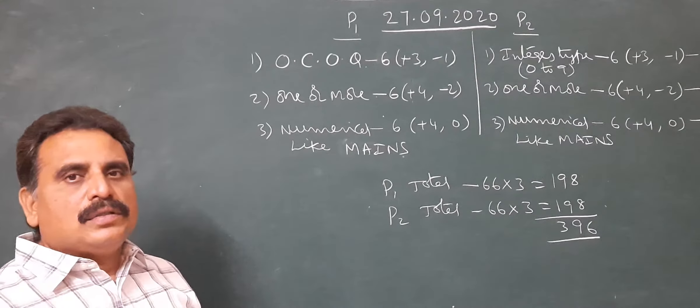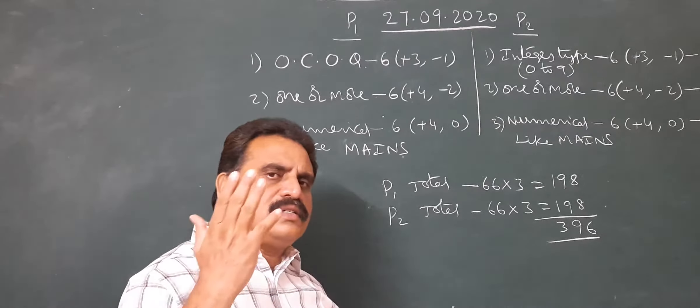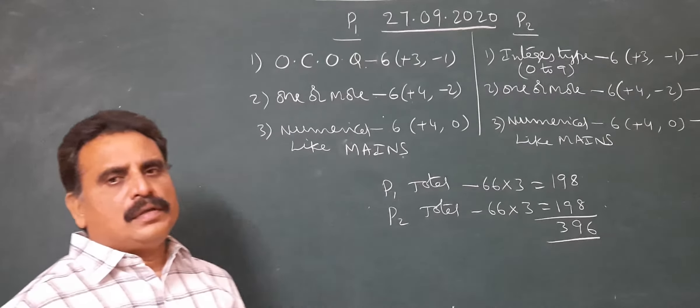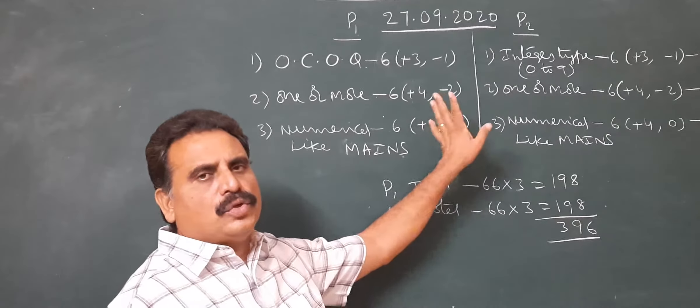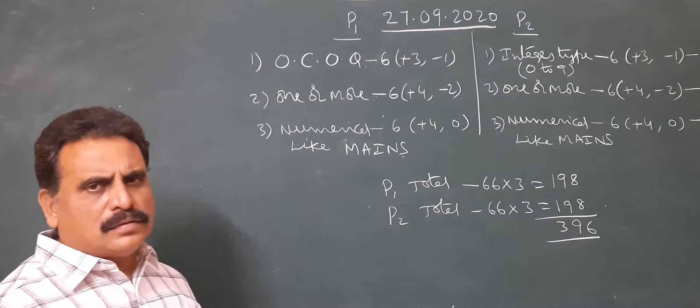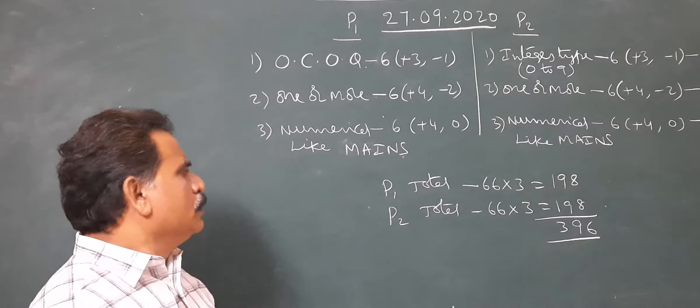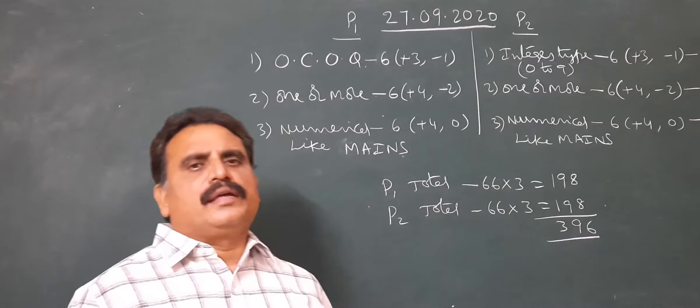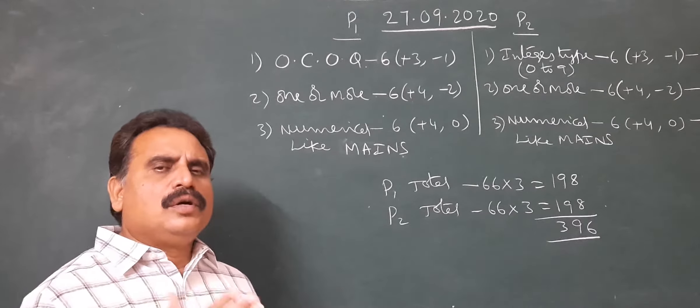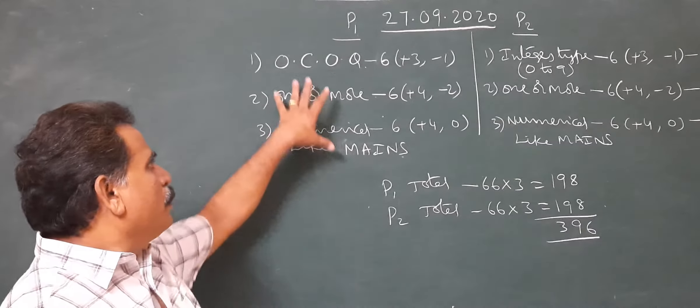Now third section, that is numerical type. This section contains six questions. Each question carries four marks, plus four, zero. If you answered wrong, no negative, zero. So this is like mains-type questions, numerical type questions. Decimal up to two decimals you are correct. This is the paper pattern.